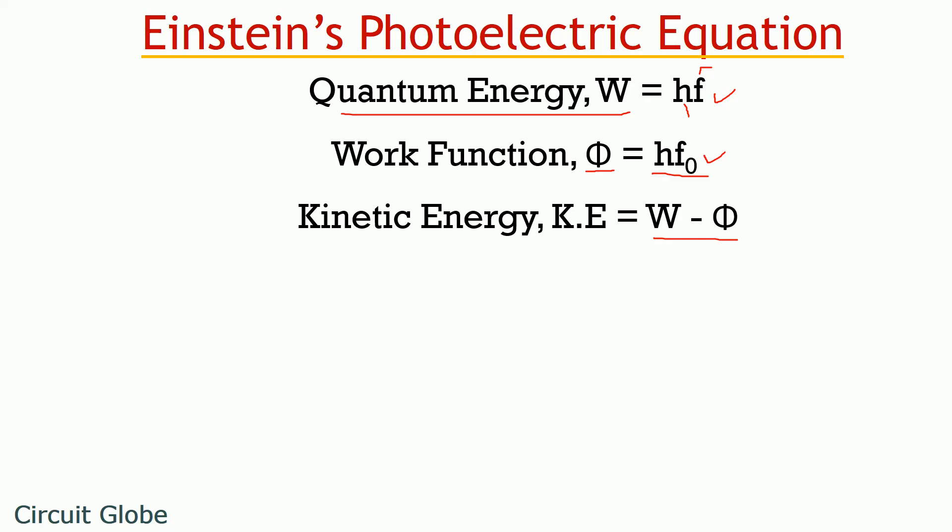So, on substituting the value of quantum energy and work function in this particular equation, we will get kinetic energy equals HF minus HF0. Also, we know kinetic energy is given by half mv square. So, substituting this value also, we will get half mv square equals HF minus HF0. On transposing quantum energy to LHS and kinetic energy to RHS, we get this particular equation, and this equation is known as Einstein's photoelectric equation.